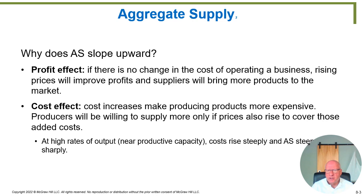Why does the aggregate supply curve slope upward? There are two major effects: the profit effect and the cost effect. Let's pick each one separately.